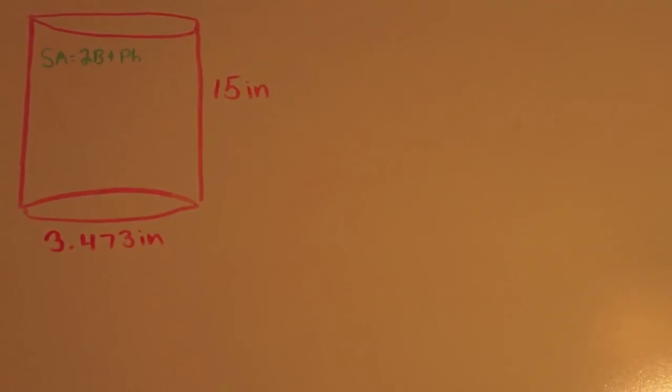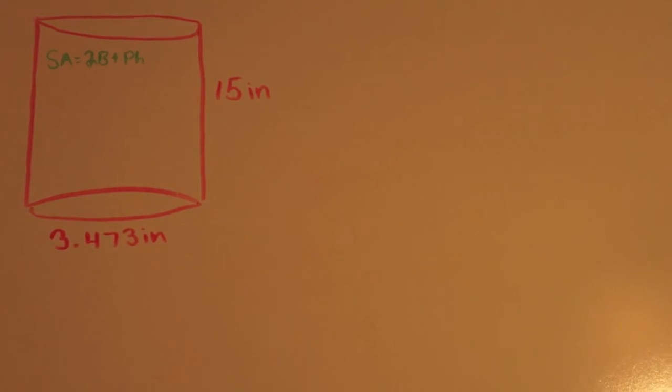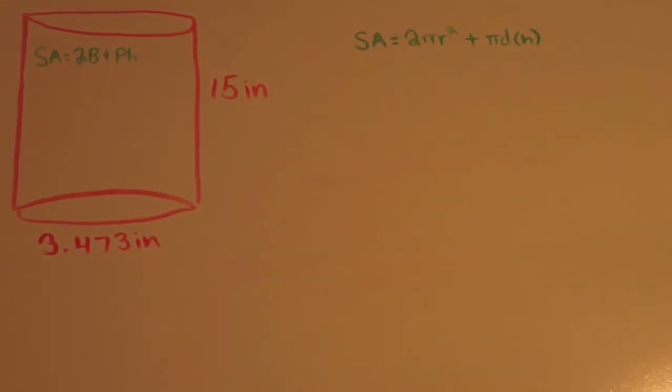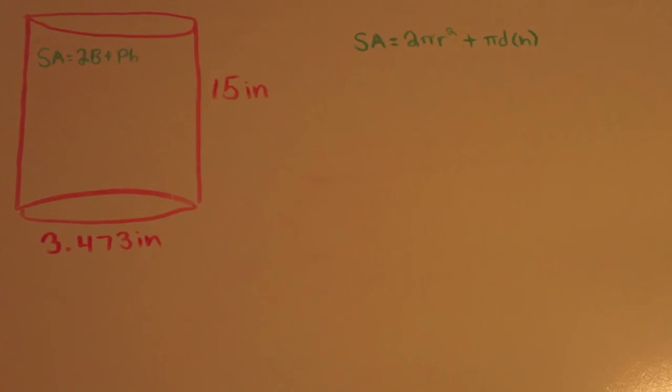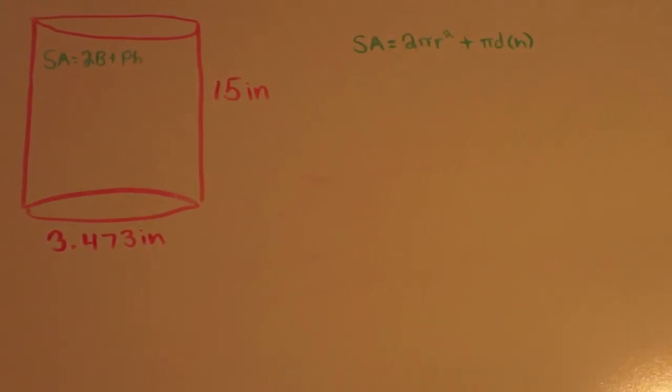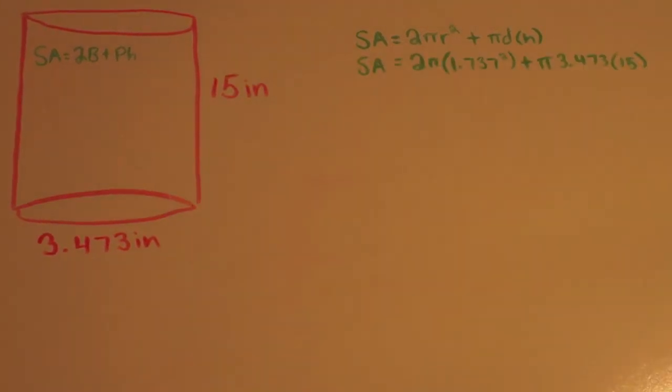The one thing that I learned is that the formula for surface area is the same for both prisms and cylinders. The expanded formula is different though for a cylinder. The expanded formula for the surface area of a cylinder is 2 pi r squared plus pi d h. If I plug in what I know,